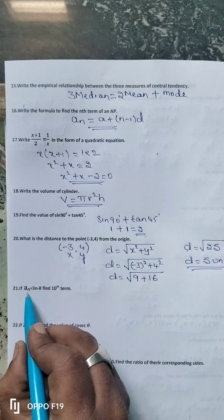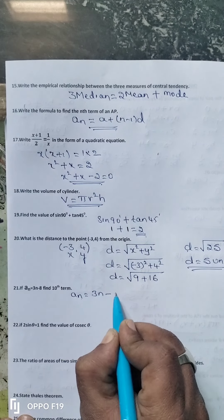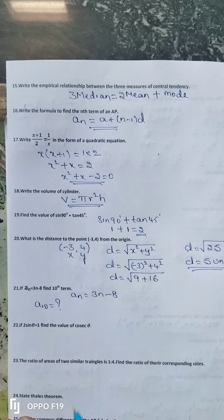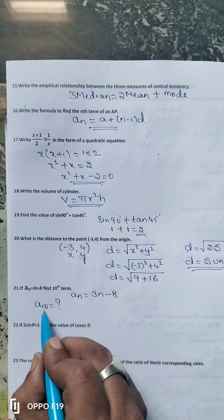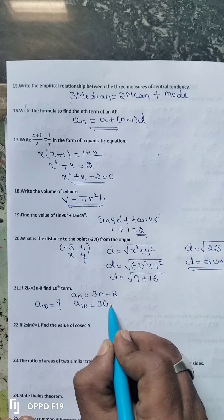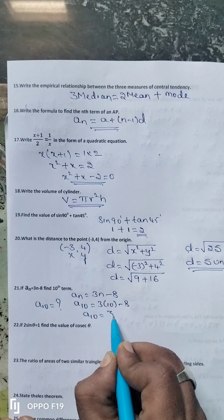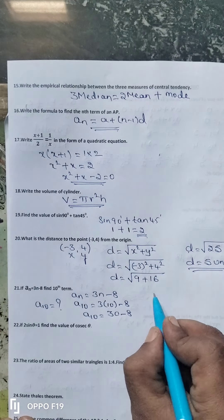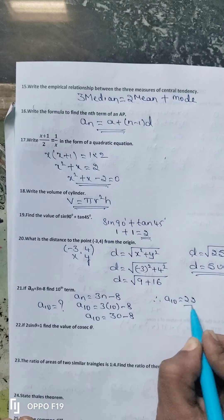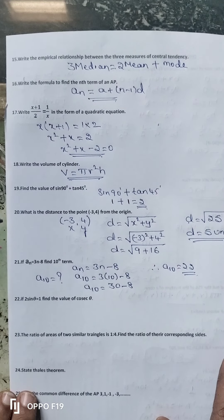The 21st question: Given Aₙ equal to 3n minus 8, find the value of the 10th term. Substituting n equal to 10: a₁₀ is equal to 3 into 10 minus 8, which is 30 minus 8, equal to 22. So the value of the 10th term is 22.